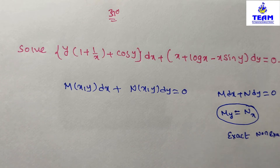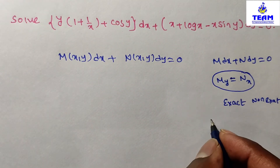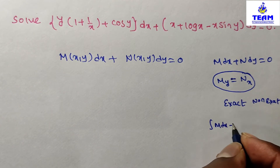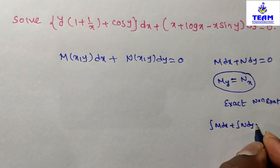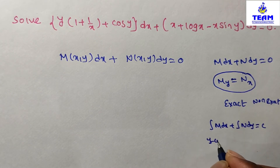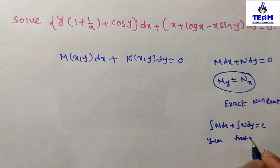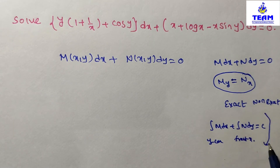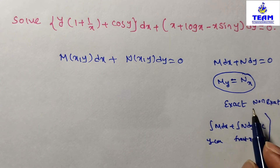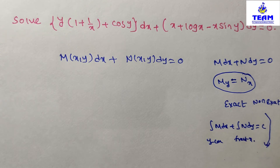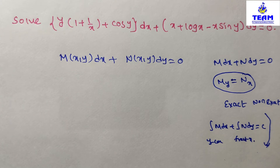If it is exact, the general solution is: integral of M dx plus integral of N dy equals c, where y is treated as constant, and the second integral is free from x terms. If it is non-exact, we have different methods — homogeneous method, the y·f(x,y) dx + x·g(x,y) dy = 0 form, or three more methods, which we will discuss in the next videos.